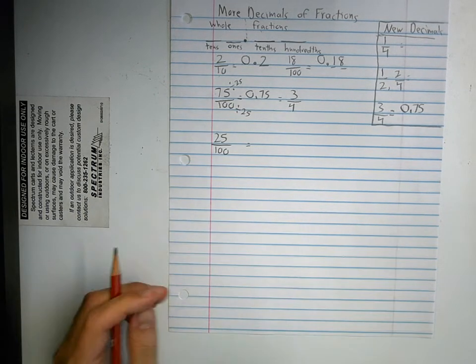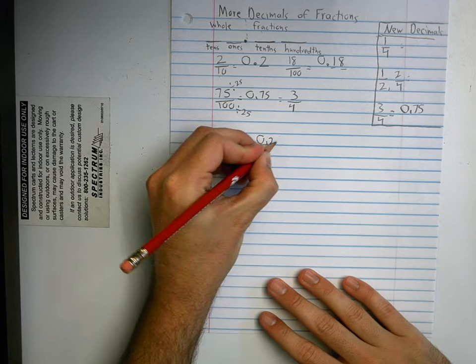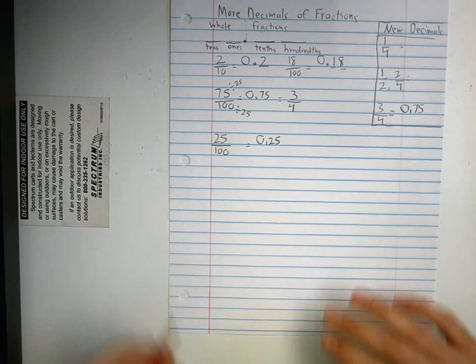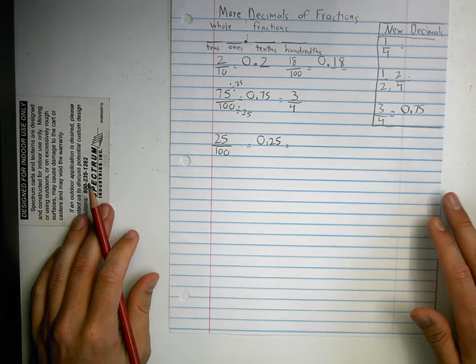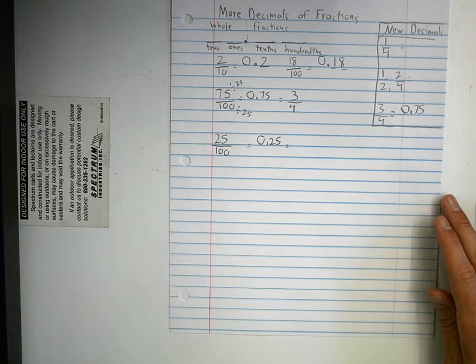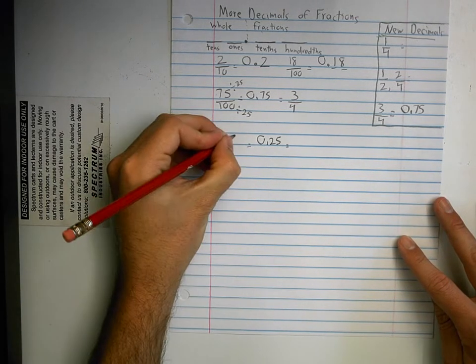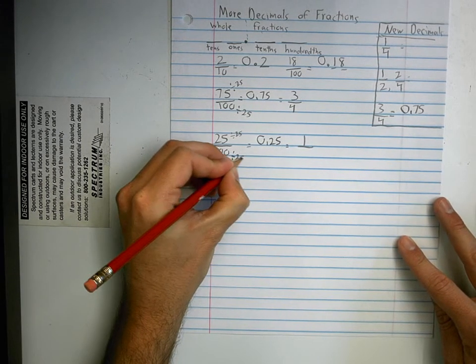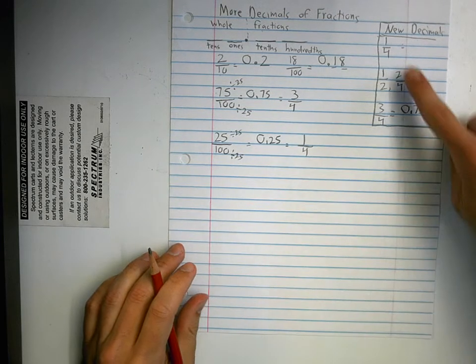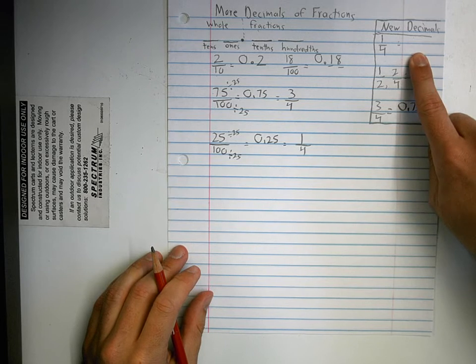That's the same. What decimal is twenty-five one-hundredths? Natalie? Yes, point-two-five. We put the zero there because we don't have any whole numbers yet. We will later on when we have our mixed numbers. Now, what fraction, if I want to break this down, what fraction can I simplify this to? One-fourth. I have to divide both the numerator and denominator by what number? Yeah, so I divide twenty-five divided by twenty-five, and that equals one. One hundred divided by twenty-five, that equals four. So, let's see. I have one-fourth as one of my new decimals that I need to figure out. So, what is the decimal for one-fourth, or one-quarter?